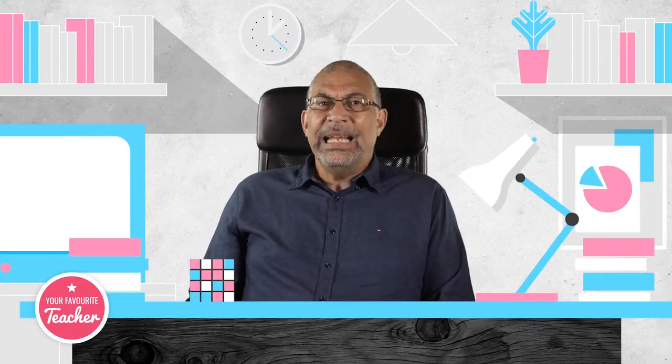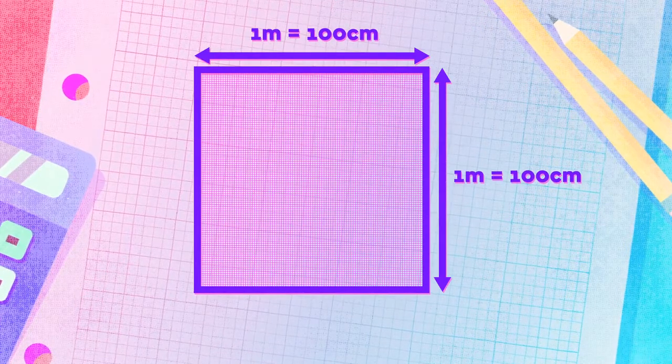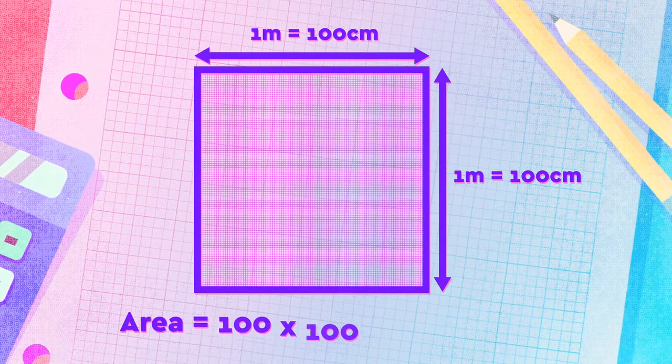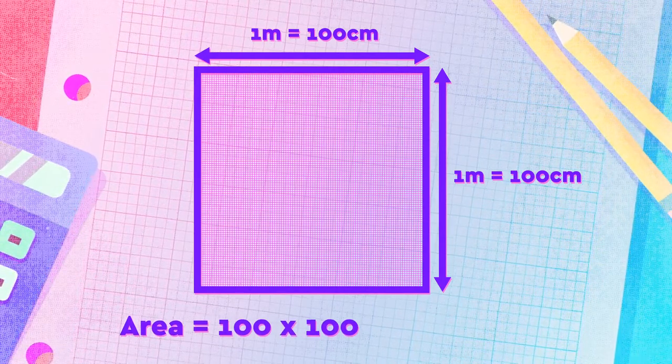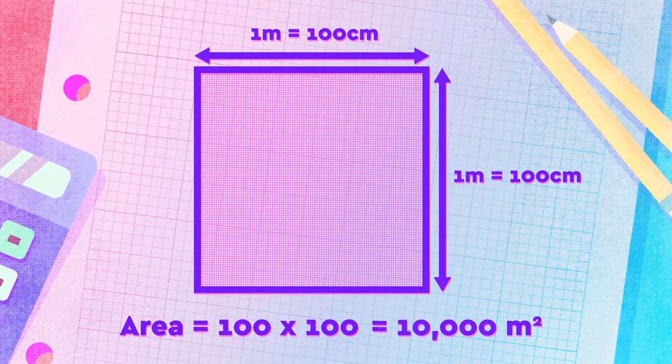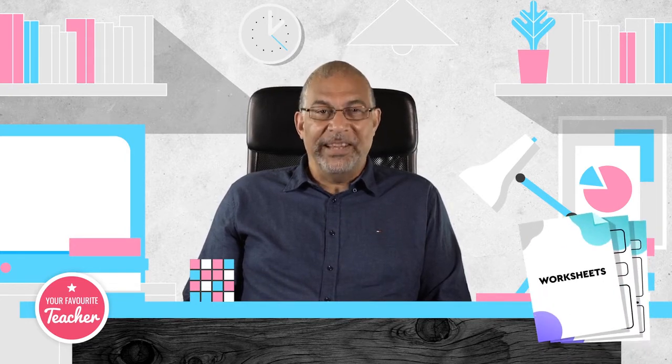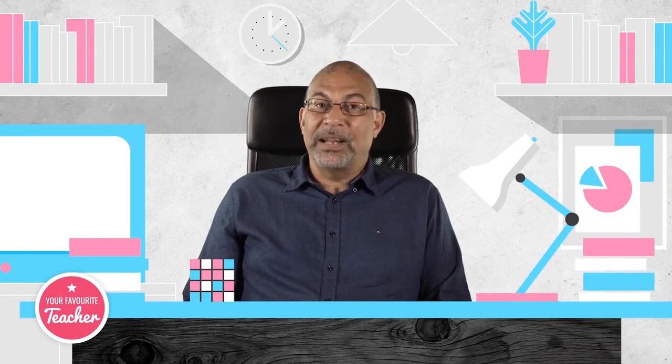To put it another way: how many little squares, each one centimeter on all sides, can fit into a big square that is one meter on all sides? If you think about it, there are 100 rows of 100 columns, or 10,000 in all. I hope this has been helpful. You can test your understanding by taking our quizzes or trying our worksheets available on the website. This has been Mr. Martino for Your Favourite Teacher — thanks for watching.